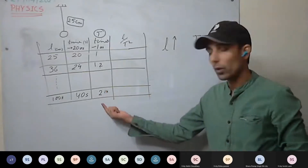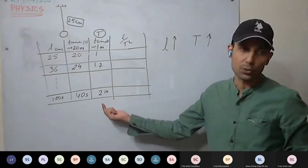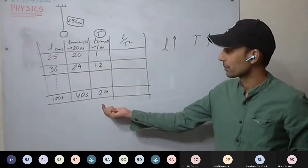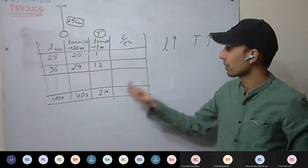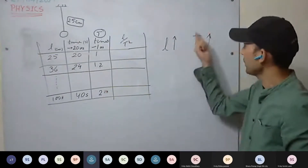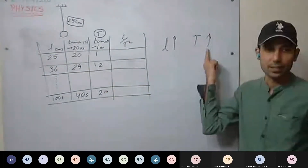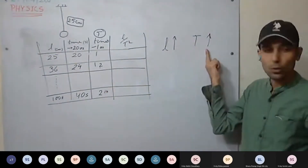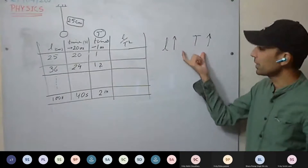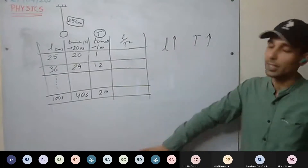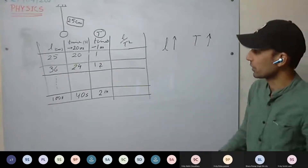So if time period is increasing, is the clock going fast or slow? Slow. If time period is increasing, the clock goes slow. We will discuss this in more detail after some time.